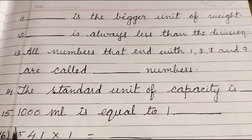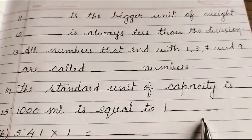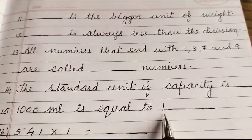Question number 15: 1000 milliliter is equal to 1 dash.